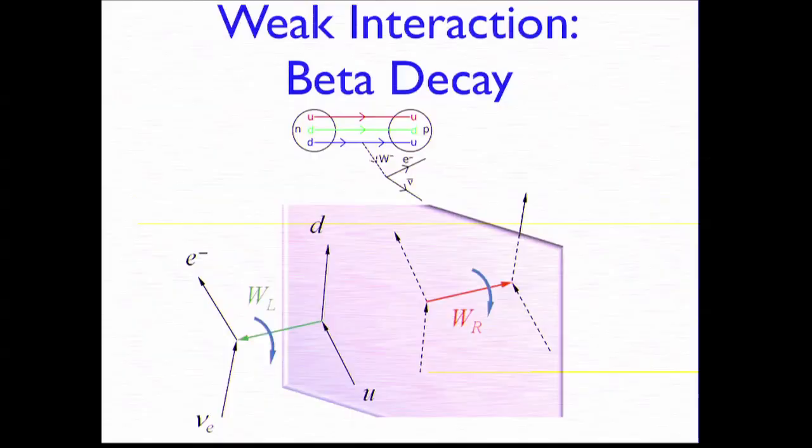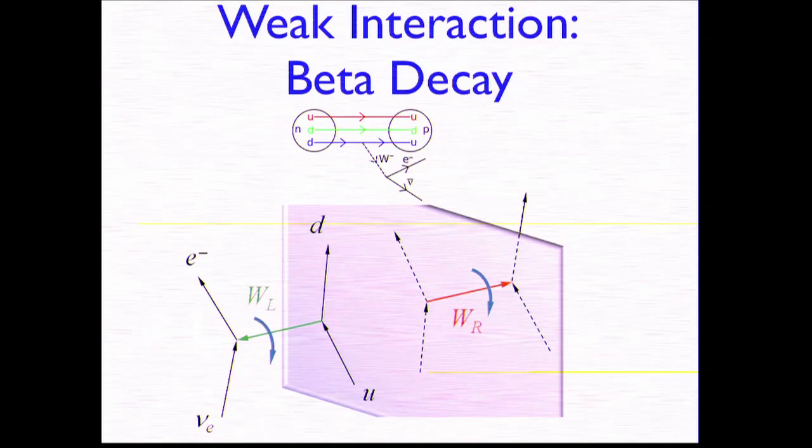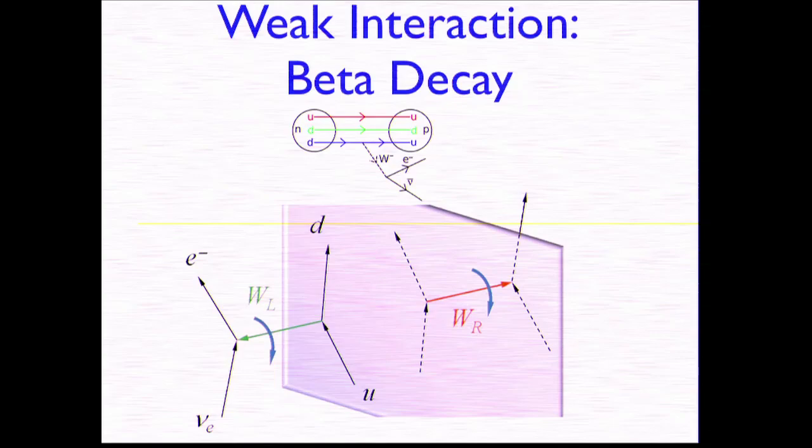Yi and Lang realized that when they looked through the data, there was no statement about the weak interaction. This is the interaction that's responsible for something called beta decay. What they realized was that since there was no data, they should not assume that parity is conserved. And they proposed an experiment. The result of that experiment, done by Madame Wu at Columbia, won them the Nobel Prize. So let me explain what this experiment is.